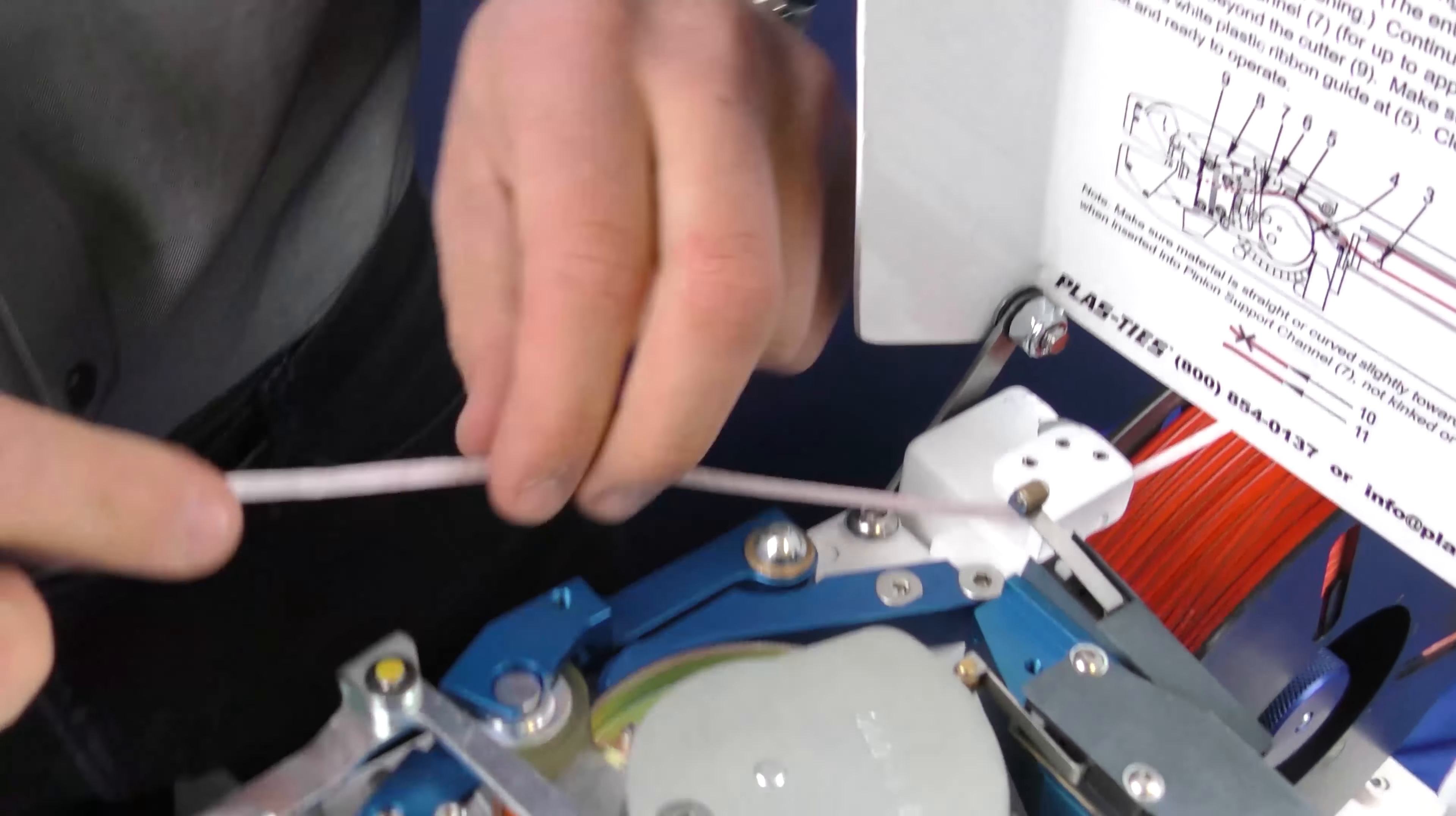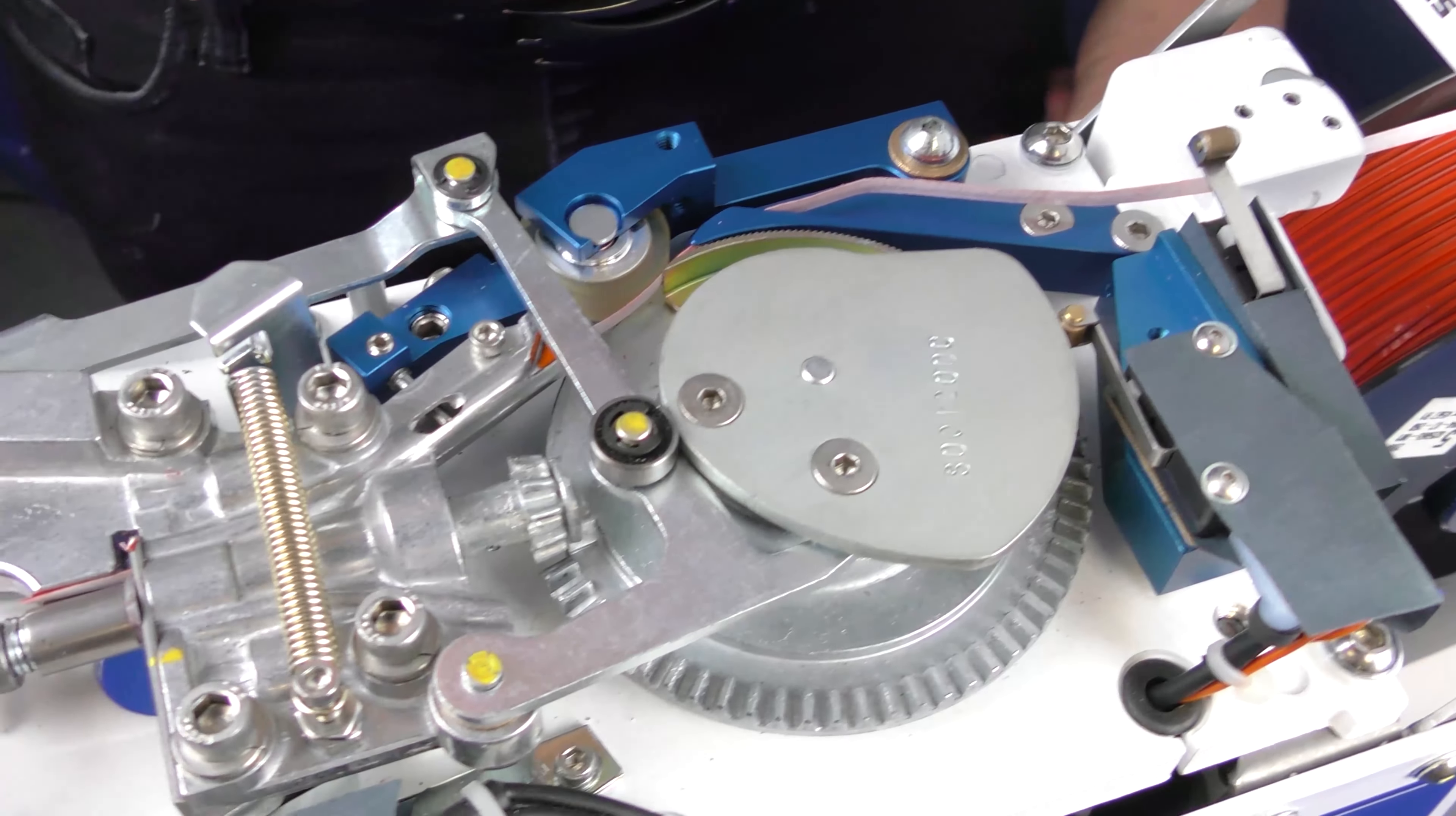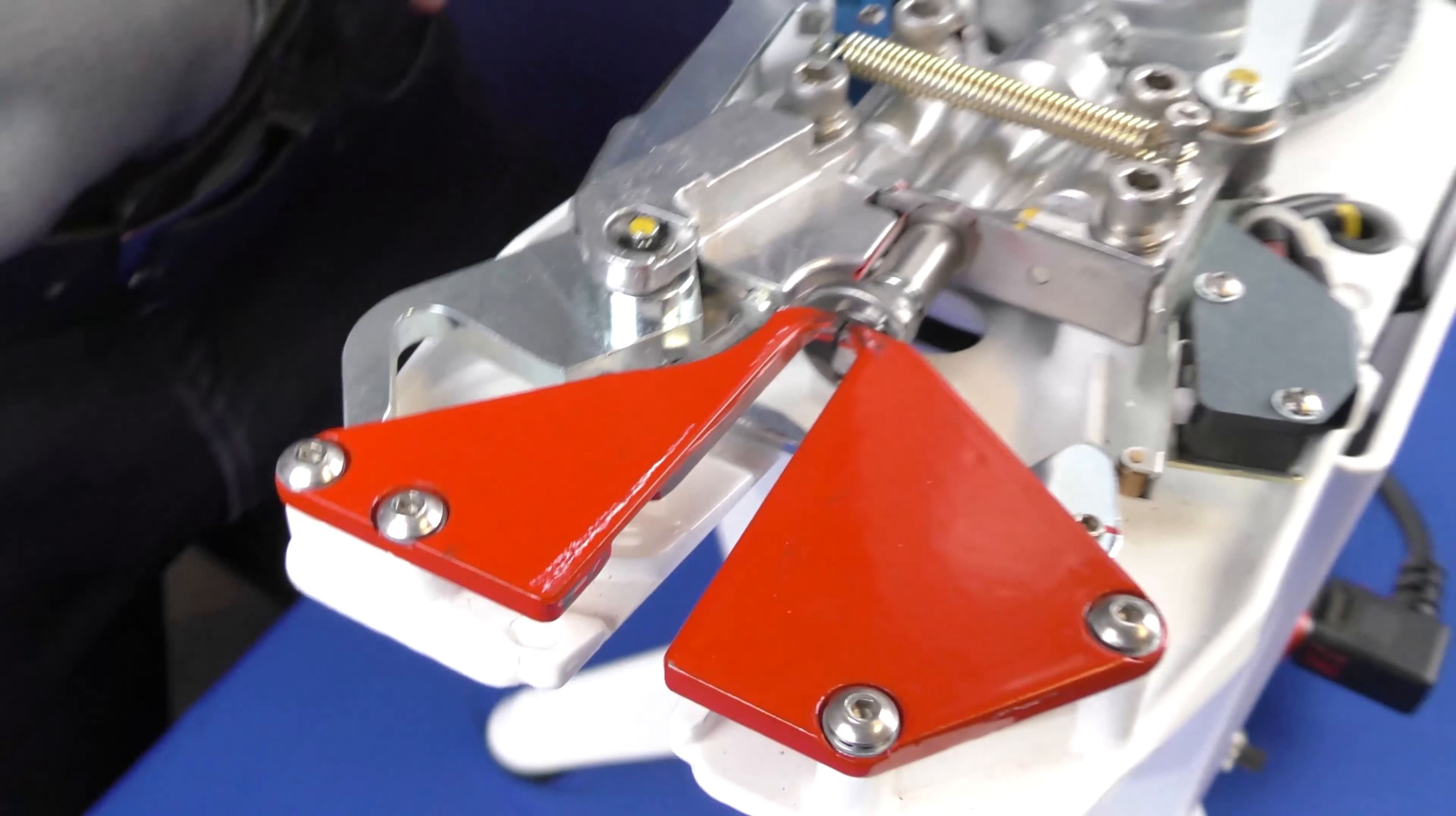Con su mano derecha, jale la palanca para abrir el conducto de alimentación. Mientras sostiene la palanca, pase la parte plana del material a través del conducto anaranjado con su mano izquierda. Continúe alimentando hasta que vea que el material llegue al frente de la máquina.